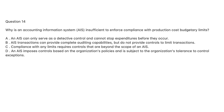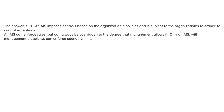Question 14. Why is an accounting information system, AIS, insufficient to enforce compliance with production cost budgetary limits? A. An AIS can only serve as a detective control and cannot stop expenditures before they occur. B. AIS transactions can provide complete auditing capabilities, but do not provide controls to limit transactions. C. Compliance with any limits requires controls that are beyond the scope of an AIS. D. An AIS imposes controls based on the organization's policies and is subject to the organization's tolerance to control exceptions. The answer is D. An AIS can enforce rules, but can always be overridden to the degree that management allows it. Only an AIS with management's backing can enforce spending limits.